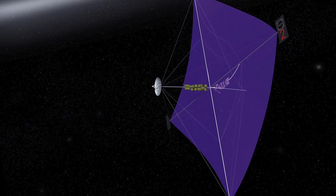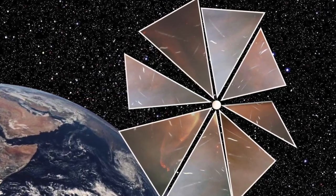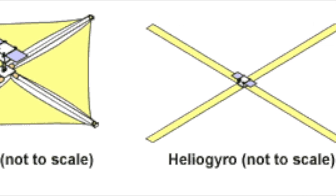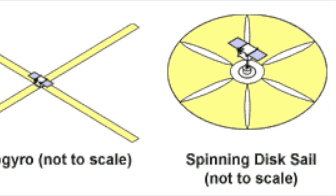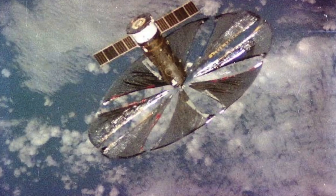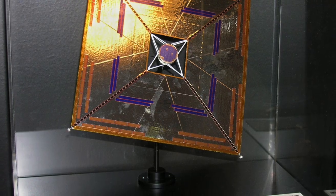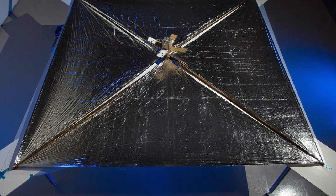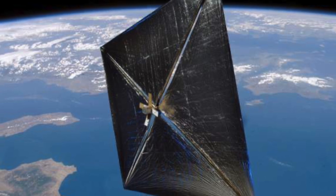NanoSail-D2, launched in 2010, gathered data about using solar sails for deorbiting dead satellites. Planetary Society's LightSail projects aim to gradually raise spacecraft orbits using solar sails. NEA Scout was a CubeSat solar sail mission developed by NASA's Marshall Space Flight Center and JPL to encounter near-Earth asteroids. Sunjammer was a technology demonstration sail craft cancelled in 2014 due to contractor issues.